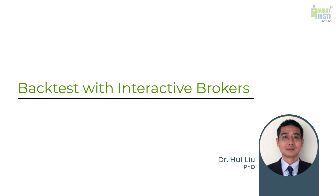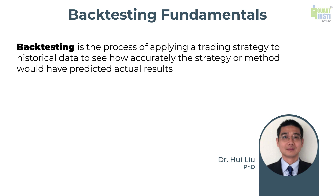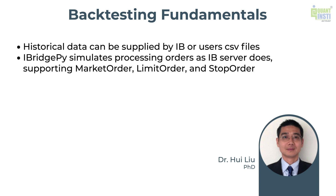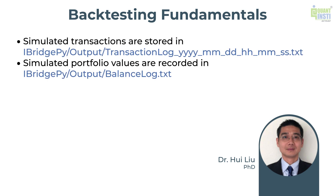Backtesting is the process of applying a trade strategy to historical data to see how accurately the strategy or model would have predicted actual results. AveragePy retrieves historical data from IB or user-provided CSV files, then simulates processing orders as the IB server does. It supports market orders, limit orders, and stop orders. The simulated transactions are stored in another folder so you can check the backtesting result and analyze your strategy.